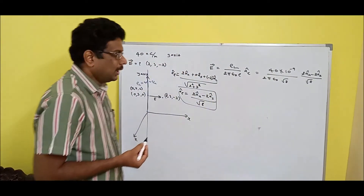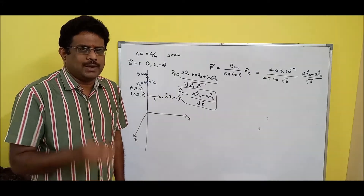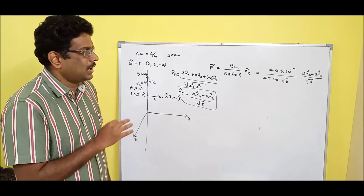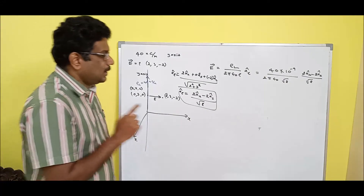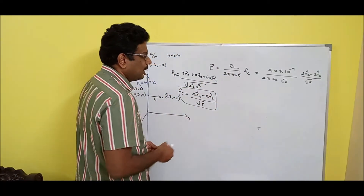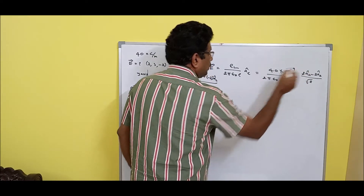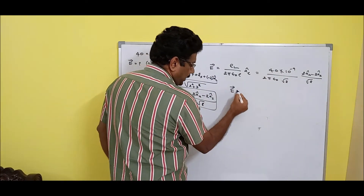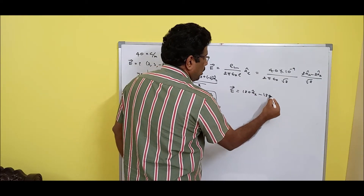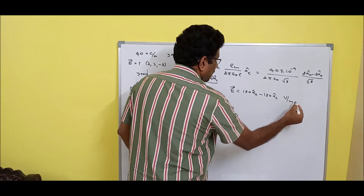There is no difference between R and rho — please remember. In the point charge formula it was R squared, but here for the line charge it is just R. Calculate the whole value, then multiply by 2 and by minus 2 respectively. The result is: electric field intensity = 180 A_x_cap minus 180 A_z_cap volts per meter.